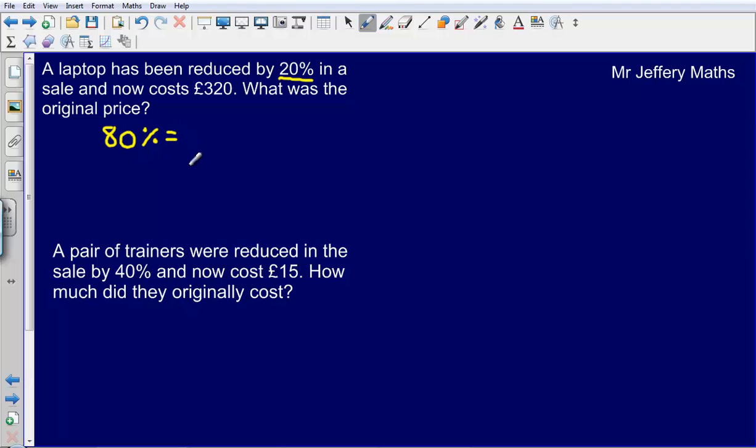So what I could say is that 80% in this case is equal to £320. Now all that I then need to do is figure out what was my 100%? What was my original price? What did I begin with?